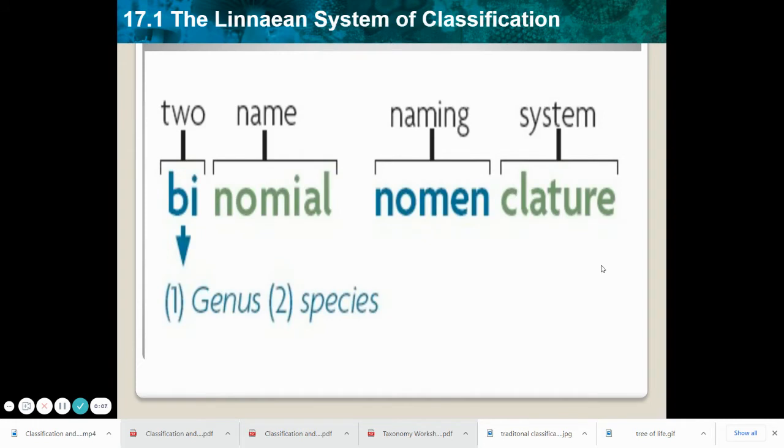A part of taxonomy, or this grouping of organisms based upon their similar traits, is the assigning of a universally accepted scientific name.